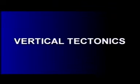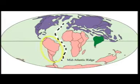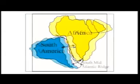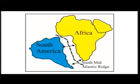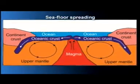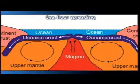Then there is sea floor spreading. You must have heard about the mid-Atlantic ridge. On the two sides of the mid-Atlantic ridge, to the west you have South America, and to the east you have Africa. These two continents move away from each other by creation of new ocean floor at the mid-Atlantic ridge. This history of the separation of the two continents, which were once joined, can be known through fossils. The rate of spreading of the sea floor has been determined through microfossils preserved on the floor of the ocean. This we call horizontal tectonism.